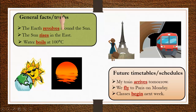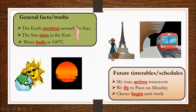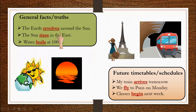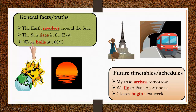The third use is for general facts or truths. For example: 'The earth revolves around the sun.' 'The sun rises in the east.' 'Water boils at 100 degrees Celsius.' These are general facts, so we use simple present tense.